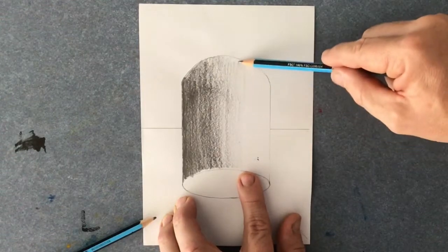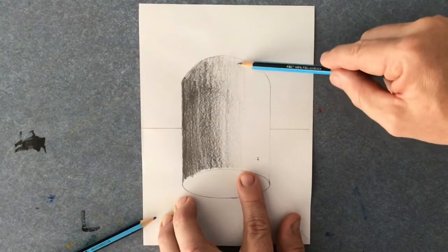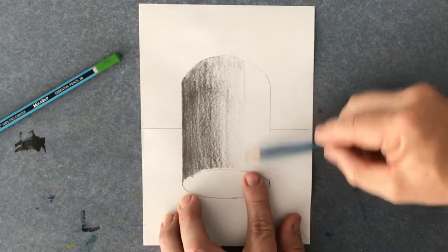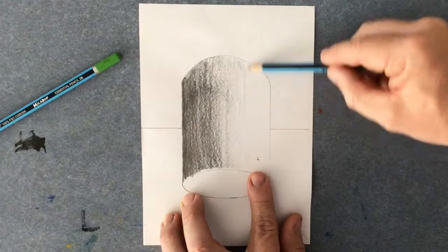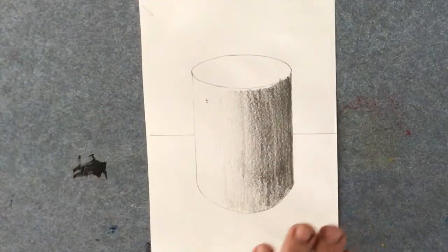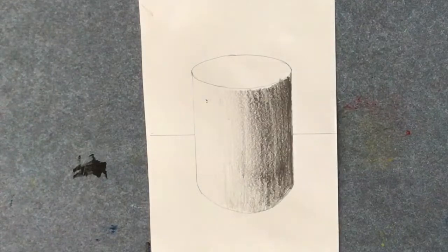So two ways of controlling your shading or three ways. Using the pencil, the correct pencil, the pressure. Now I'm swapping to the HB and I'm going to leave some white area. So at the moment, does that look like it's shaded around like that. Now it needs a couple more things. It needs a shadow.